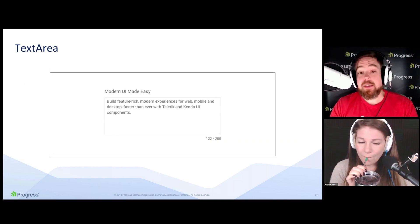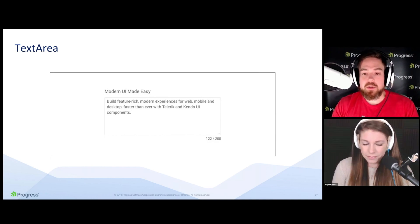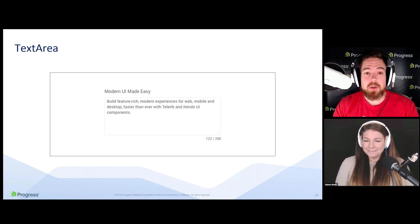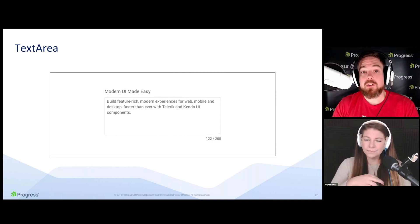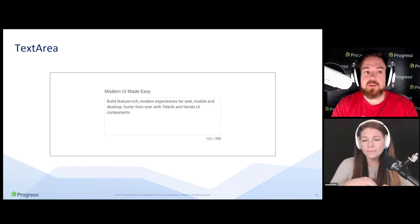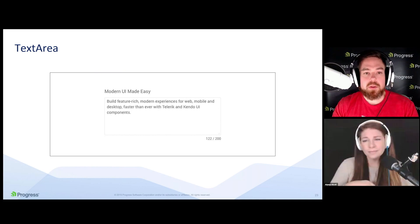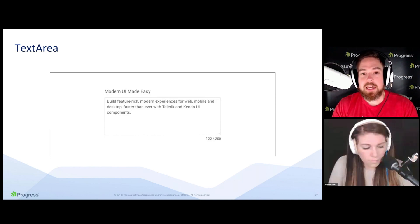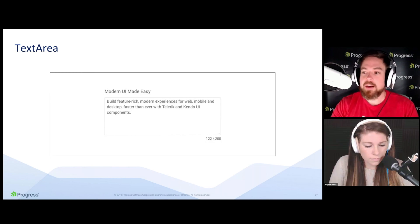Another component we released is the text area component. We took the existing HTML text area element and built additional functionality on top of it, then integrated it with other components from the Kendo UI suite. Not only does this give you a properly styled text area matching Kendo UI themes, but we're also adding functionality to make sure it fits naturally into your application. Some folks may know this as a multi-line text box, especially coming from the material design world.